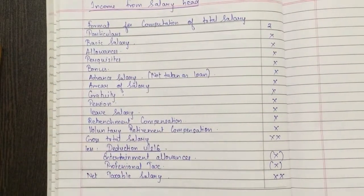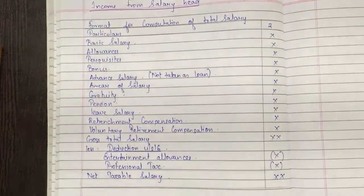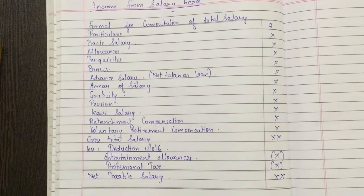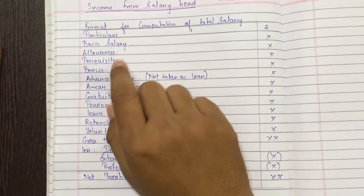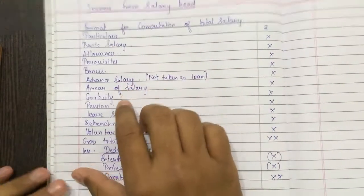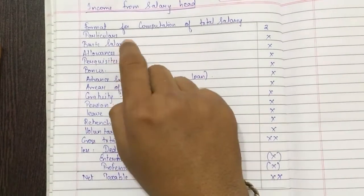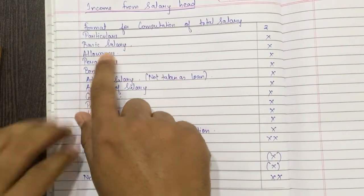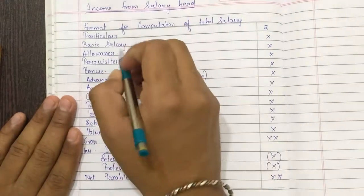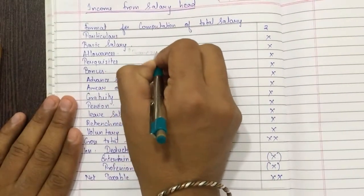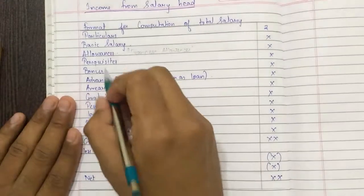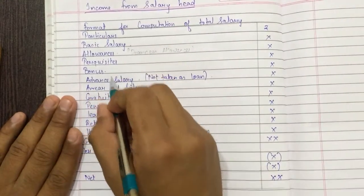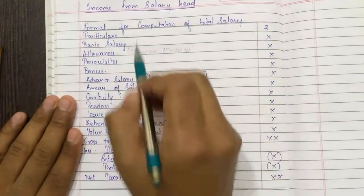I hope you all have copied this format. Basic salary means the salary without anything extra like bonus or dearness allowances. There are many types of allowances — dearness allowances and all — so all are included in allowances. All types of allowances, perquisites, bonus, and advance salary not taken as loan will form part of the salary.